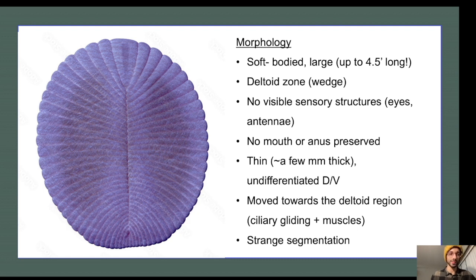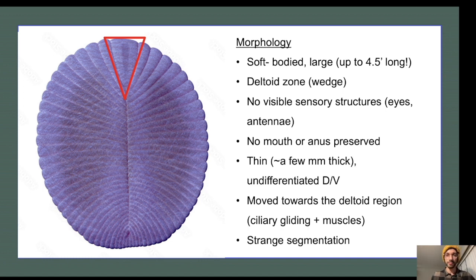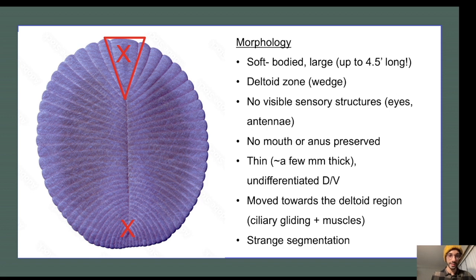Dickinsonia was an unusual organism by modern standards. It was completely soft-bodied and large, with some specimens reaching up to about four and a half feet long. At one end was a wedge-shaped segment known as the deltoid region, where it lacked any visible sensory structures like eyes, antennae, or even chemoreceptors. It had no mouth or anus, was just a few millimeters thick, and lacked any differentiation between its dorsal and ventral surfaces. It did most of its feeding through external digestion, carving Dickinsonia-shaped grooves into the algae beneath it as it moved.